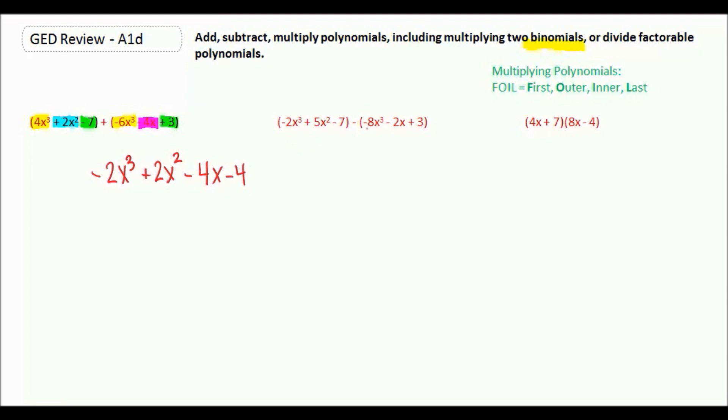Here we are subtracting, so let's rewrite it. We have negative 2x cubed plus 5x squared minus 7. But now we're reversing the sign of everything in here. Minus a negative would be plus an 8x cubed, minus a negative 2x would be plus a 4x. And then minus a positive 3 is the same thing as just subtracting 3.